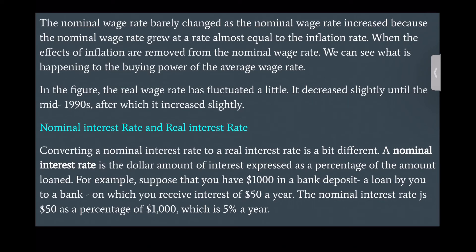When the effects of inflation are removed from the nominal wage rate, we can see what is happening to the buying power of the average wage rate. In the figure, the real wage rate has fluctuated a little. It decreased slightly until the mid-1990s, after which it increased slightly.